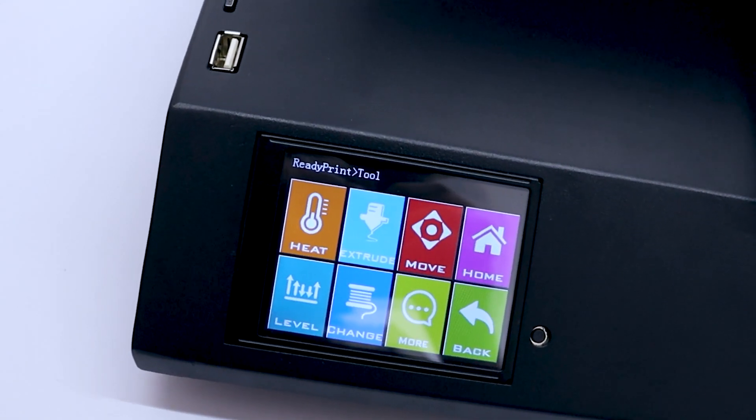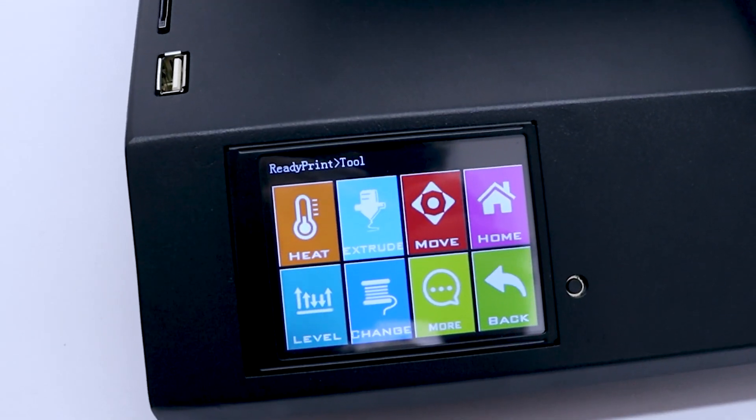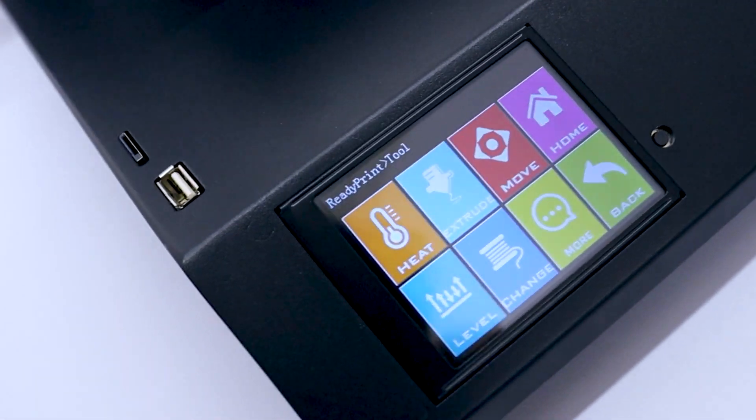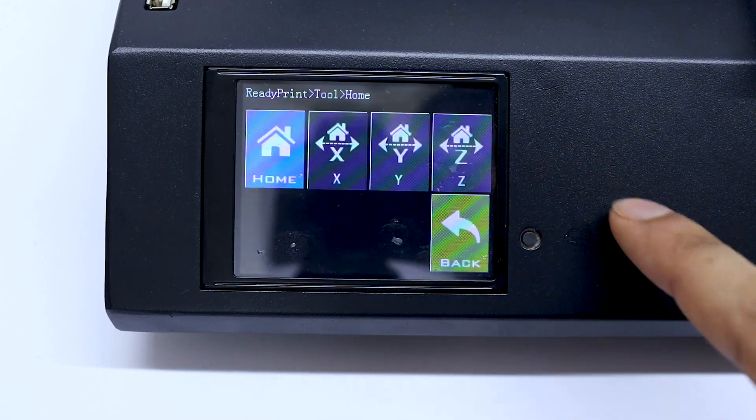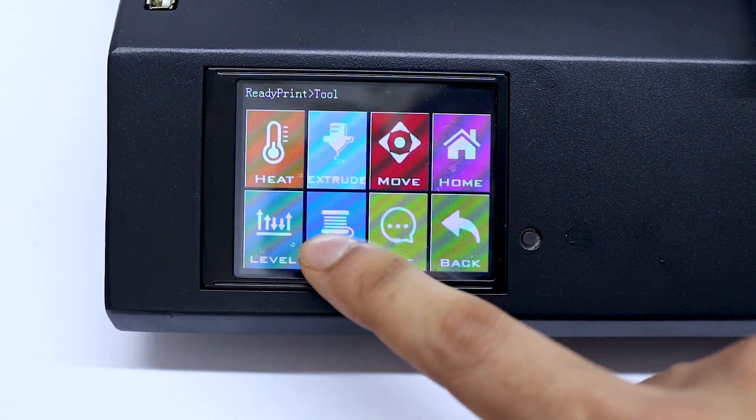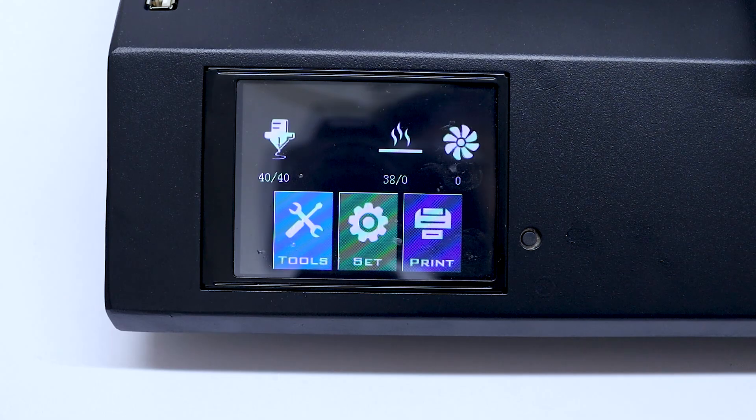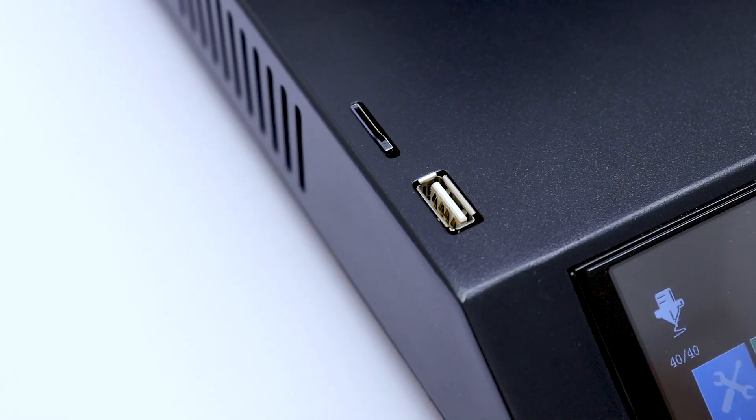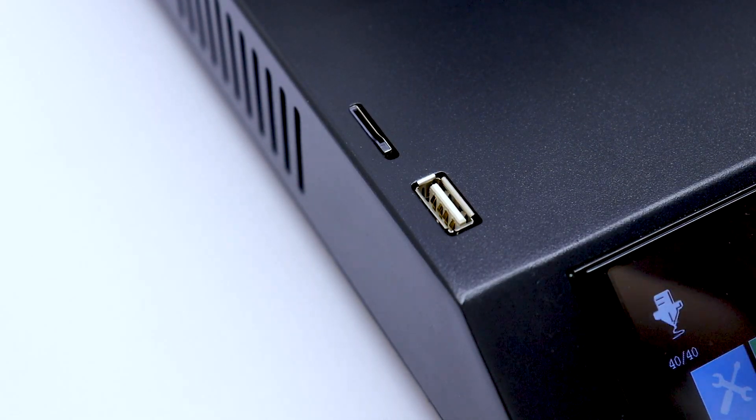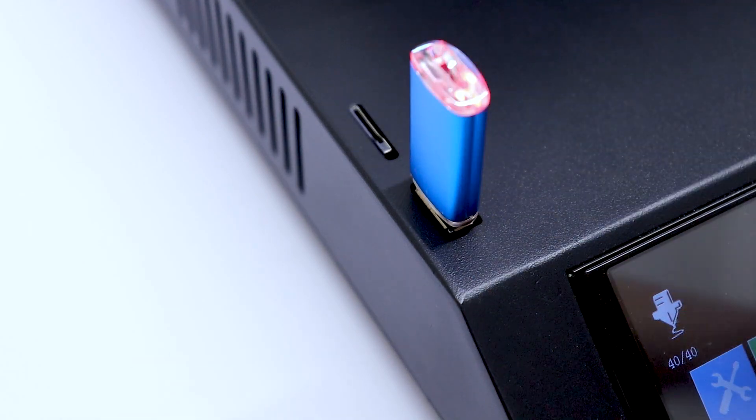This printer features a 3.5 inch TFT color touchscreen and the screen looks pretty bright and vibrant. Each submenu is divided by different colors which makes it easy to access all settings quickly. The Sidewinder X1 supports USB drive along with micro SD card, which is my personal favorite.